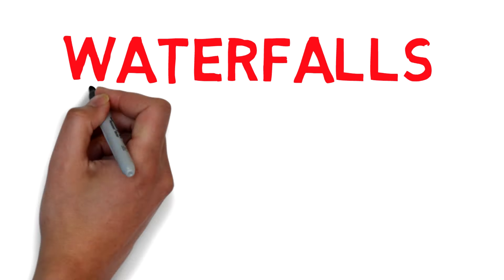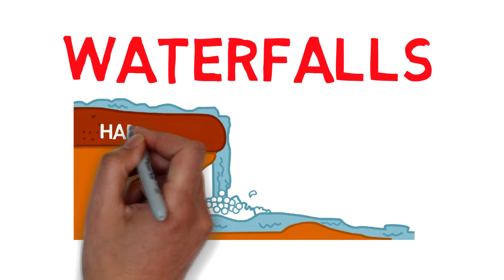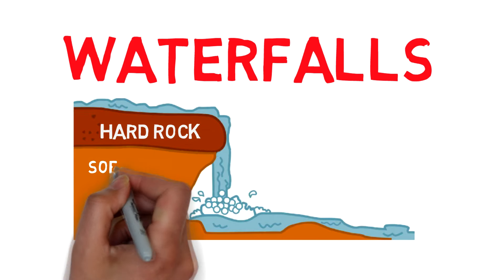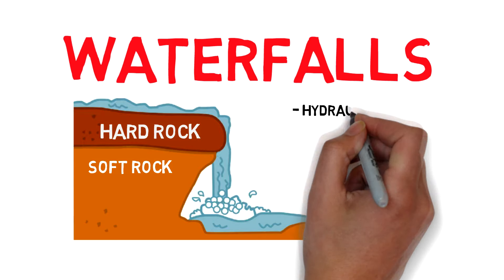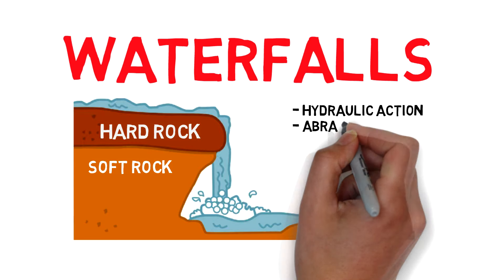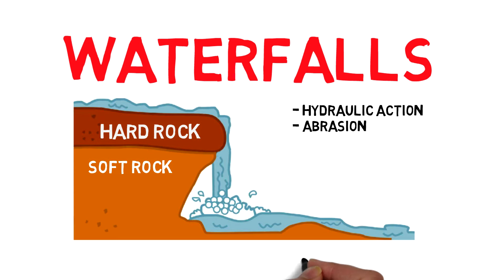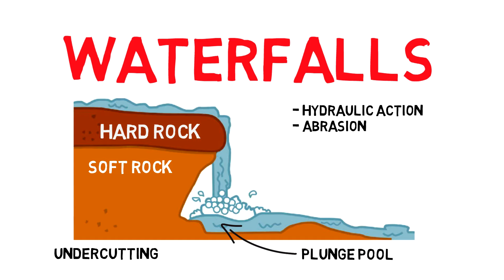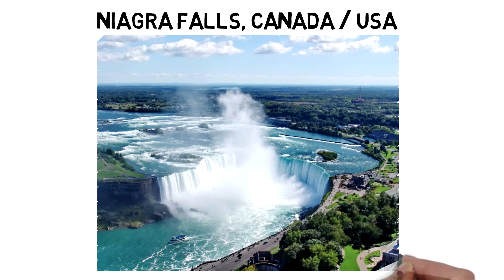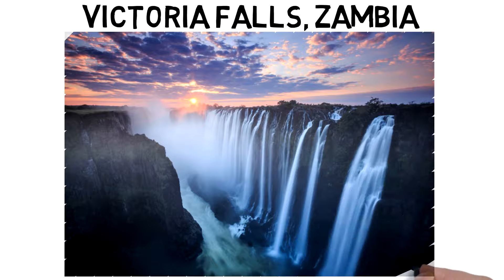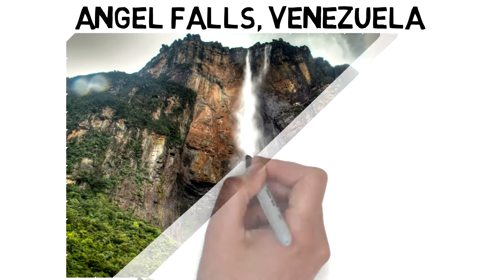Finally, we have a waterfall. A waterfall forms when the youthful river flows over a hard rock next to a softer rock. The softer rock gets eroded faster than the hard rock and forms a waterfall. The main types of erosion here are hydraulic action and abrasion. Falling water and stones create a plunge pool in the soft rock. The hard rock above the plunge pool is undercut and collapses, causing the waterfall to erode upstream over many years. Well-known examples include Niagara Falls in Canada, Victoria Falls in Zambia, and Angel Falls in South America.